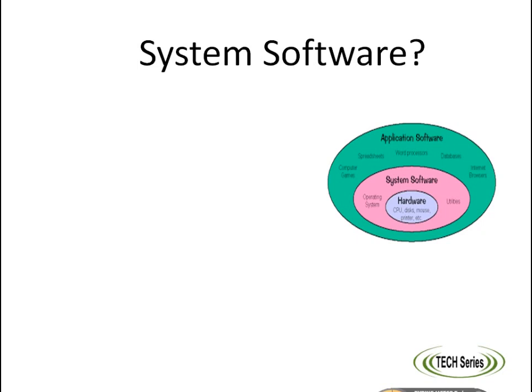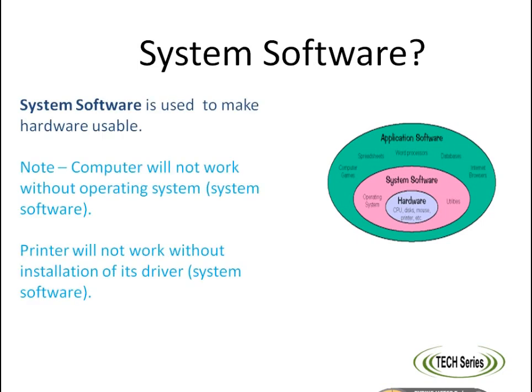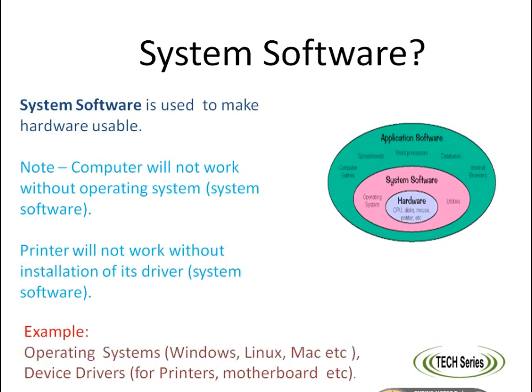System software is basically used to make hardware usable. Operating systems like Windows, Linux, Mac, and device drivers for motherboards and printers are examples of system software. System software is mostly written in the C language.